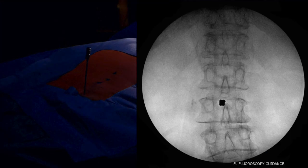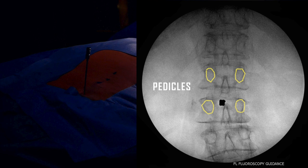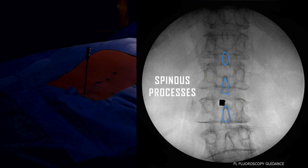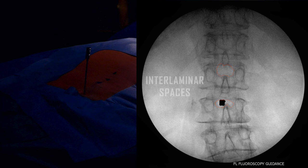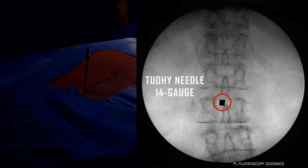Key anatomy to identify includes the pedicles, spinous processes, lamina, and interlaminar spaces. The needle should also be identified and should be coaxial in this view.